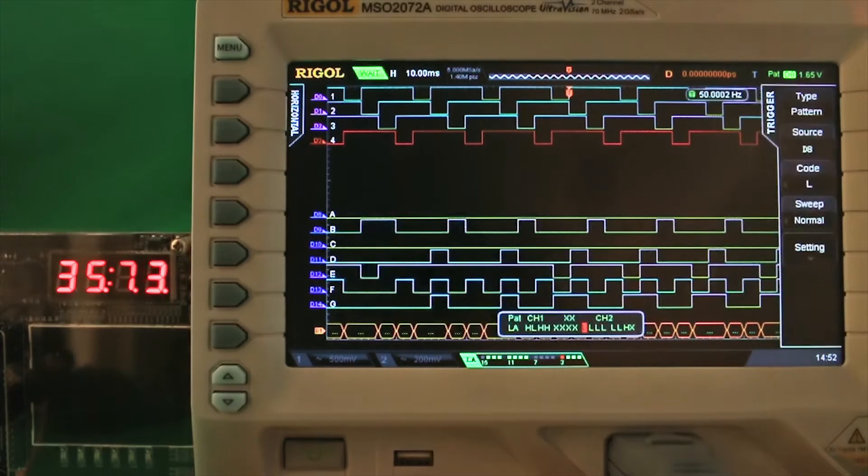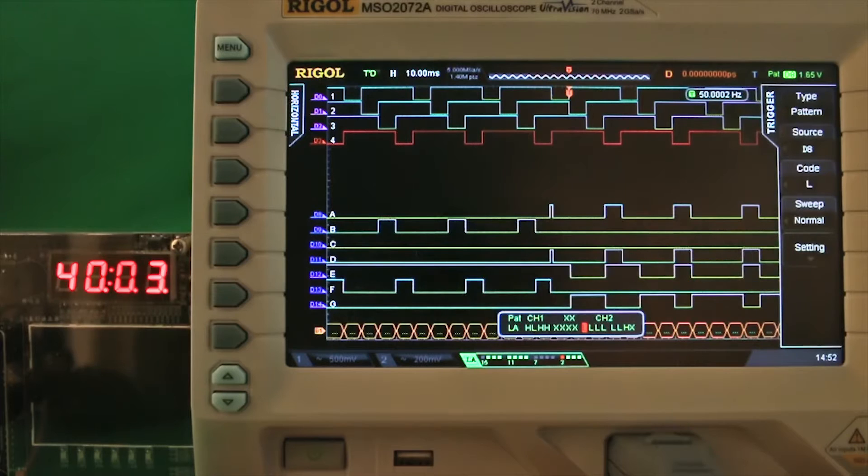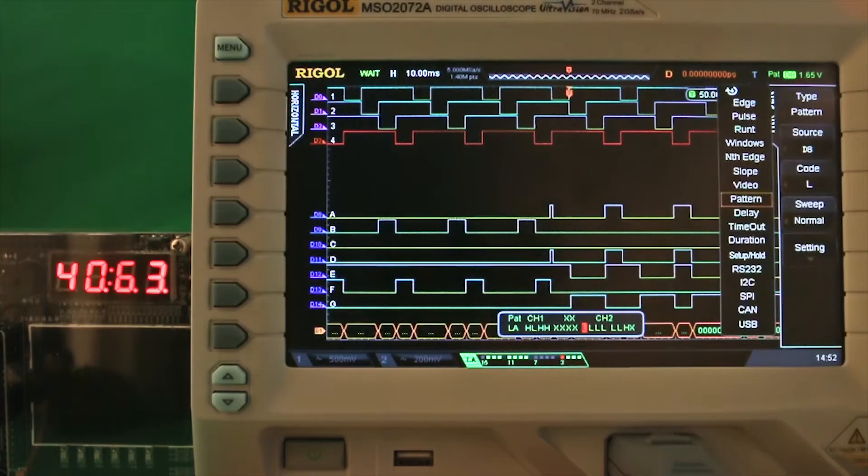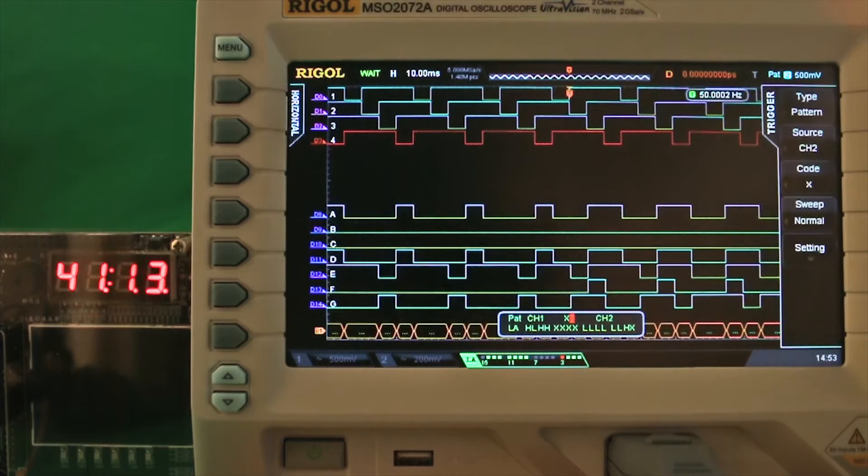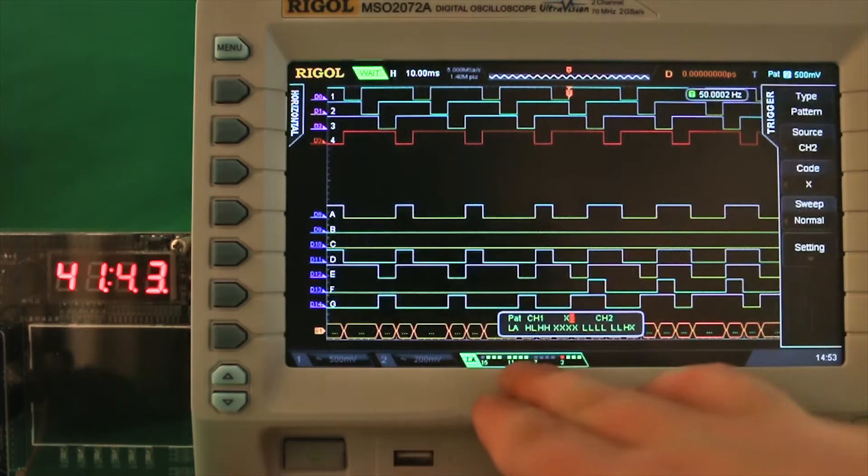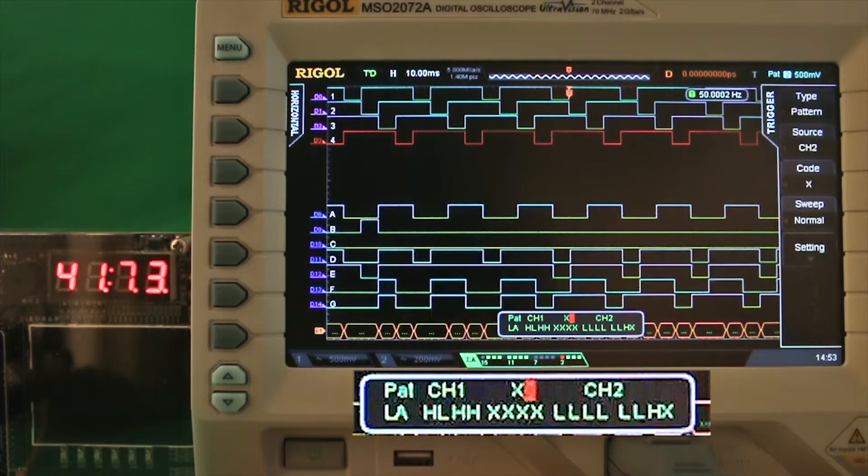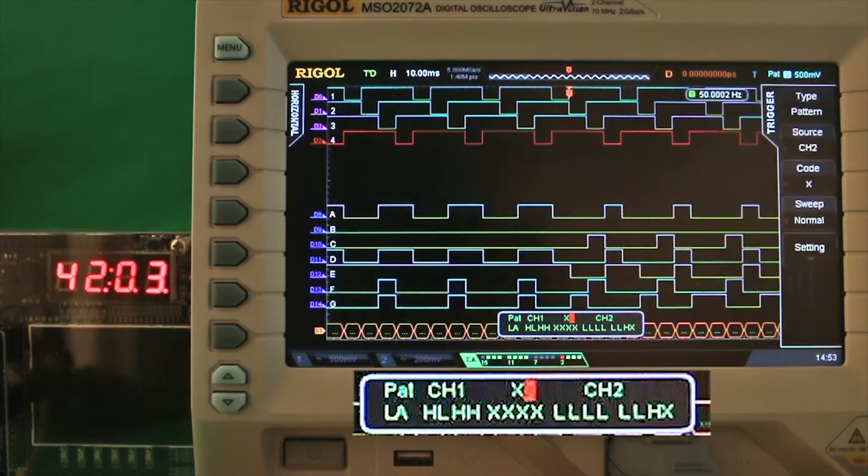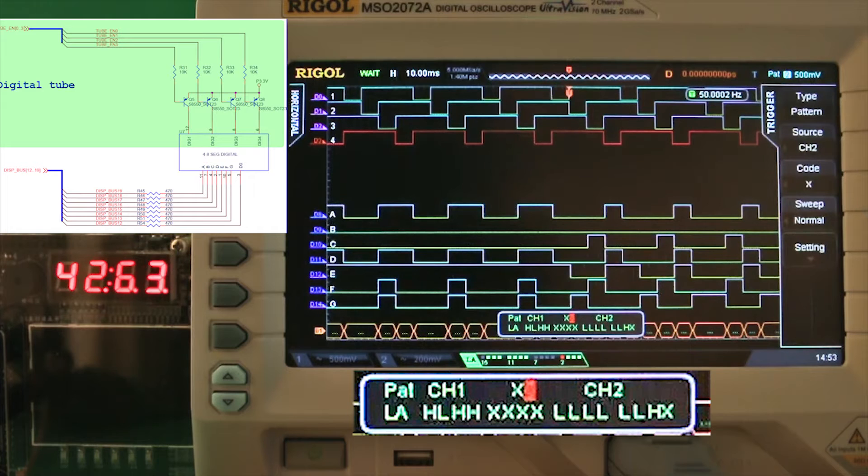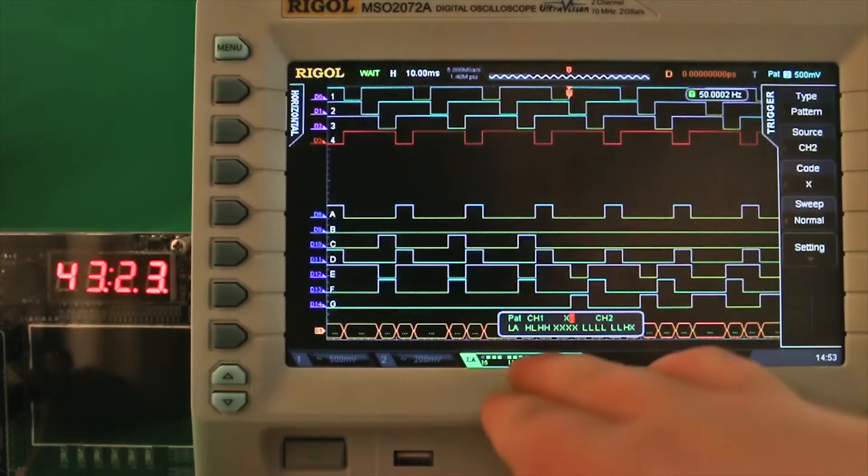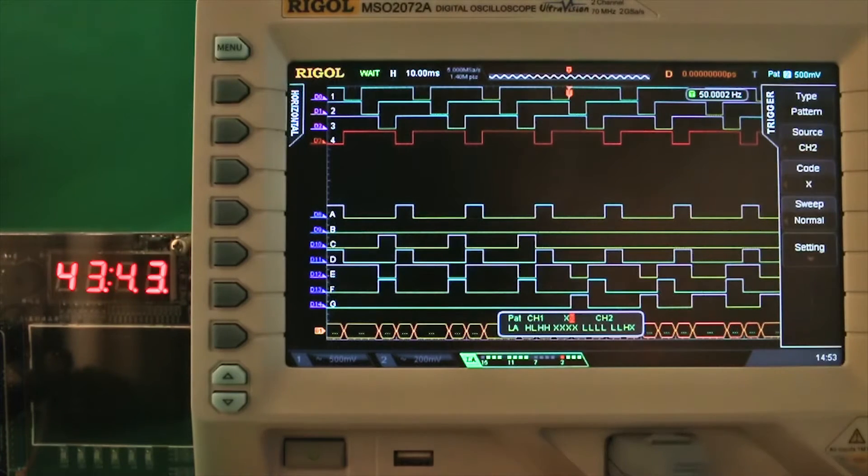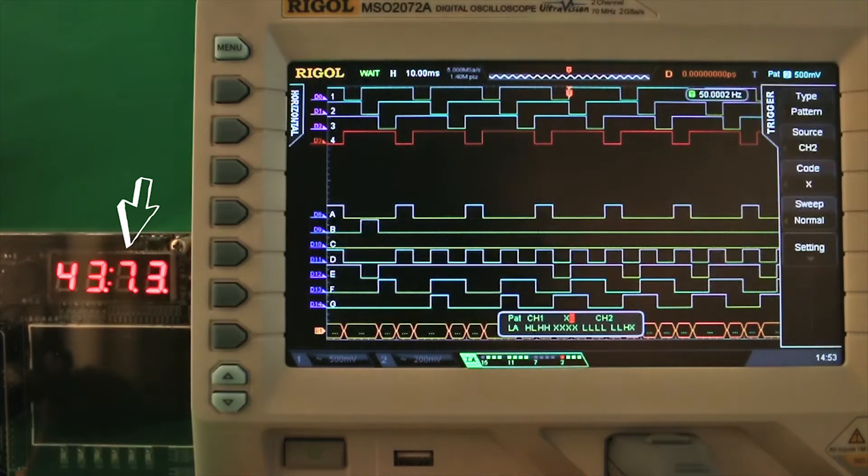Let's go to the trigger menu. Here you have the trigger menu, and here you can say that the type is a pattern. So I have a pattern selected. And here at the bottom you can see what the pattern is. So the first 4 bits are the segments, or the 7-segment displays common connection. And you see I put it on high, low, high, high. So that should be the second display.